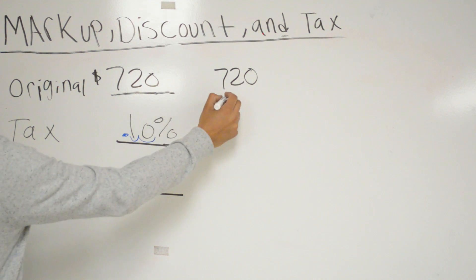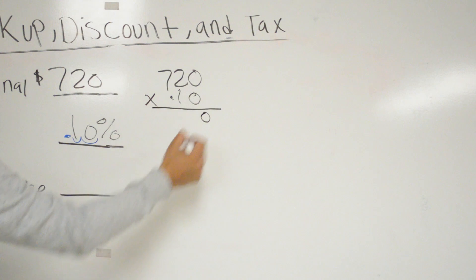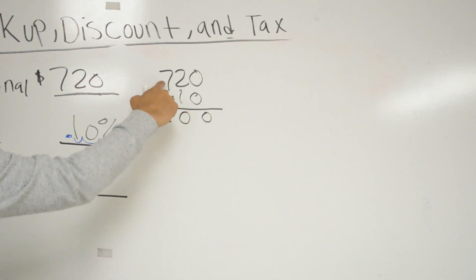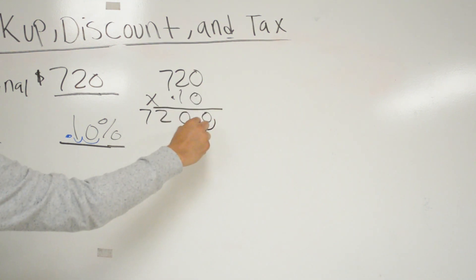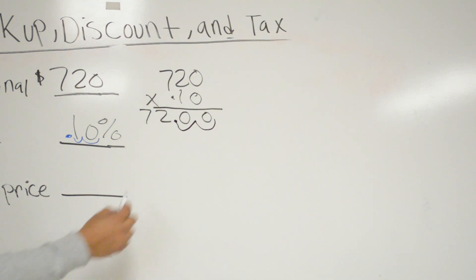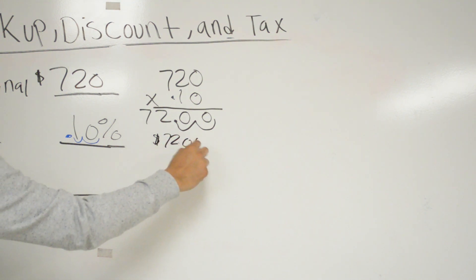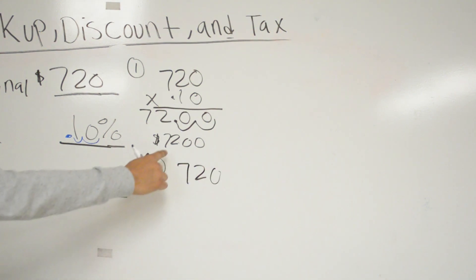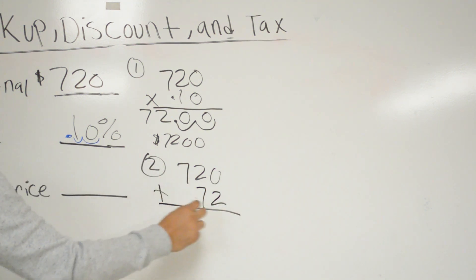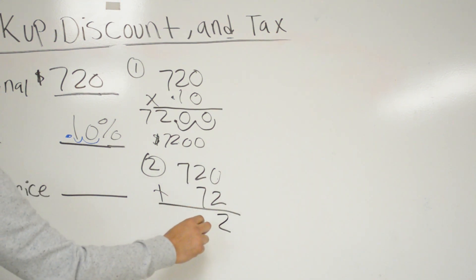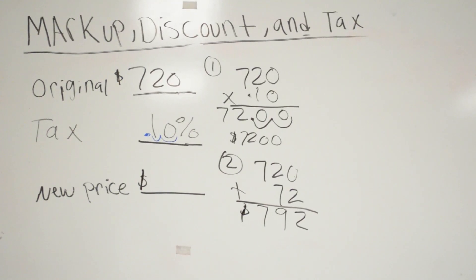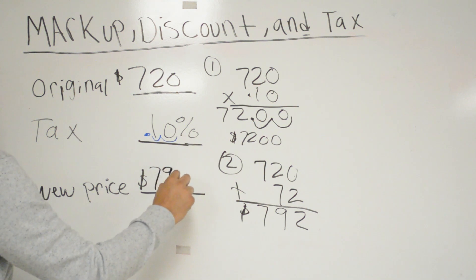Multiplying 720 times 0.10: 1 times 0 is 0, 1 times 2 is 2, 1 times 7 is 7 — and with two decimal places, the tax is $72. Step two: add the original price of $720 plus the tax of $72. 0 plus 2 is 2, 7 plus 2 is 9, 7 plus 0 is 7 — so I'm paying $792 for the computer.